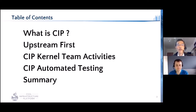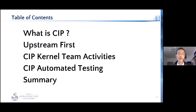So today, we first explain about CIP. In CIP, upstream first is a development principle, which I'll explain in the next section. CIP kernel and test teams follow this principle to work on tasks. We'll share what we are doing and what we have accomplished so far by each team. CIP automated testing is covered by Chris, and the other sections are covered by Kudo.